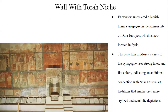The next piece of artwork we will look at is the wall with the Torah niche. Excavators uncovered a Jewish house synagogue in the Roman city of Dura-Europos, which is now located in Syria. The earliest Dura-Europos synagogue had an assembly hall, a separate chamber for women, and a courtyard. The depiction of Moses' stories in the synagogue uses strong lines and bold colors, indicating a connection with Near Eastern art traditions that emphasize more stylized and symbolic depictions. The artist created an immersive experience by integrating the story of Moses throughout the chamber.